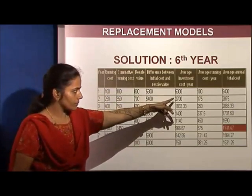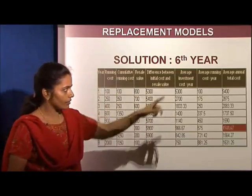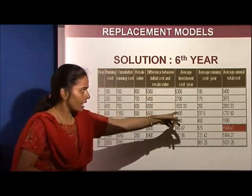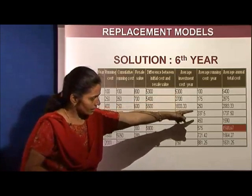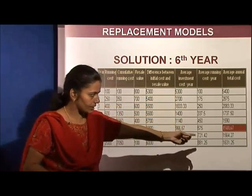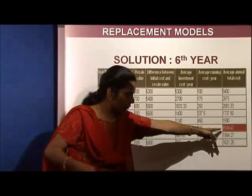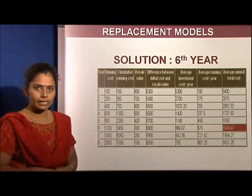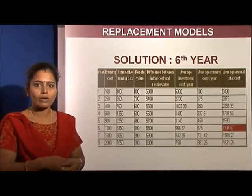The difference between initial cost and resale value changes as per the resale value each year. The average investment cost per year is calculated by dividing by the number of years, the average running cost per year is calculated, and the average total cost is the sum of both columns. The cost decreases to a certain point and then increases — the red-marked minimum value indicates that at the sixth year, replacement avoids wasting too much money.